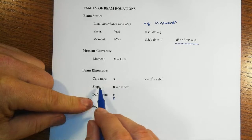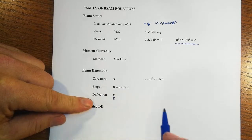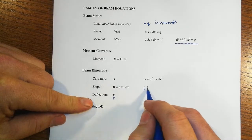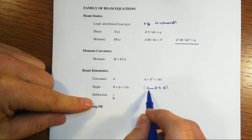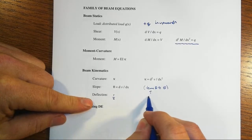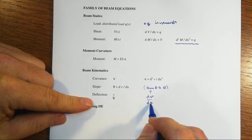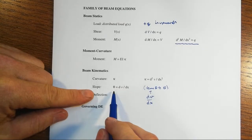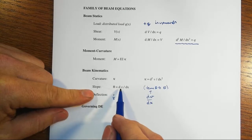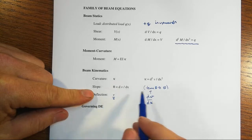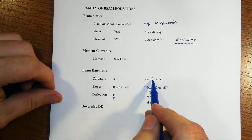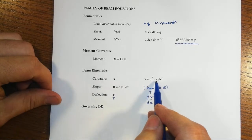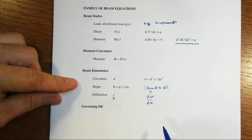Then the first derivative of that would be the slope. And because of small angle theory, tangent of theta is approximately equal to theta. And of course, tangent of theta is the first derivative there. So that's why you see this symbol for slope, theta equals d little v dx. And the second derivative, again, small angle theory, the curvature is approximately equal to the second derivative of little v with respect to x. That's our kappa.